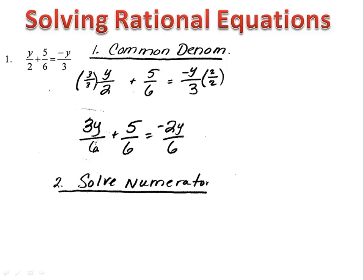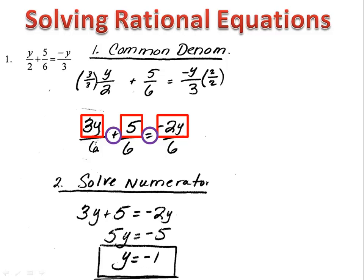Now, all we have to do is write a simple equation from what we have. We look at the numbers in the numerator and the signs in between them. Here, 3y plus 5 equals negative 2y. That's the equation that we'll solve. We'll just ignore the denominator. We solve that and we find out that y equals negative 1.